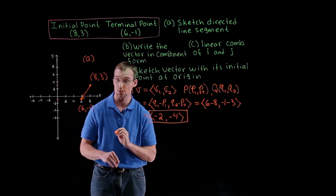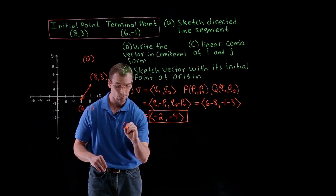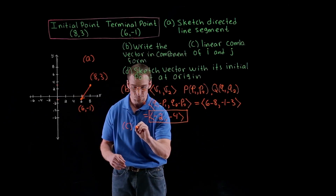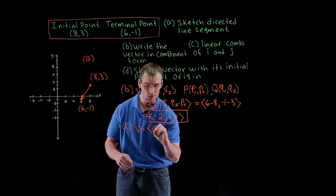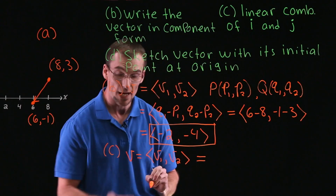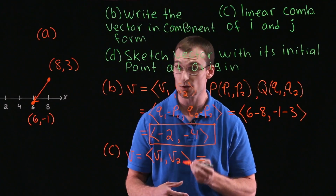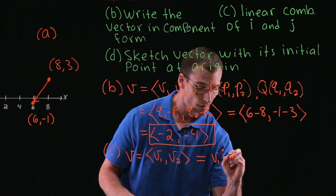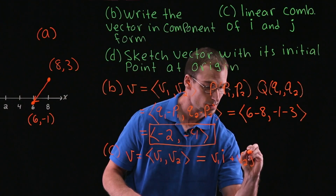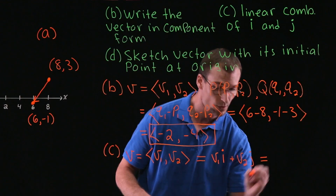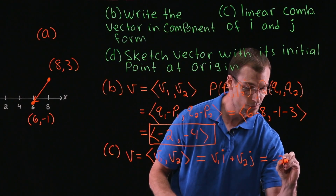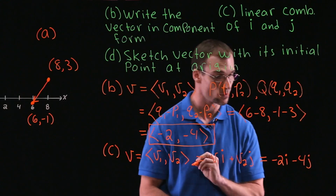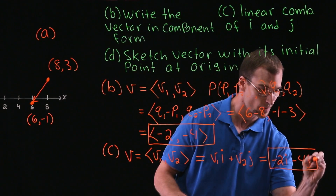For Part C, we want to write our vector as a linear combination of the unit vectors i and j. For a vector v with components v1 and v2, any vector in component form can be written as a linear combination by taking v1 multiplied by unit vector i, plus v2 multiplied by unit vector j. So substituting our values: v1 is -2, giving us -2 times i, and v2 is -4, giving us minus 4 times j. So the answer is -2i - 4j.